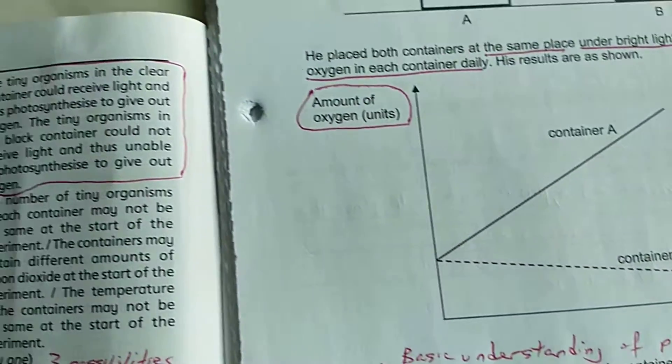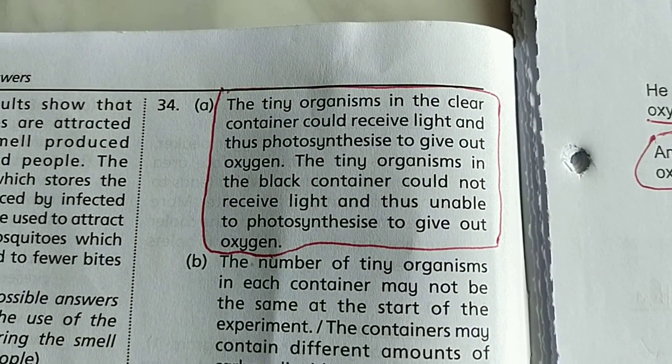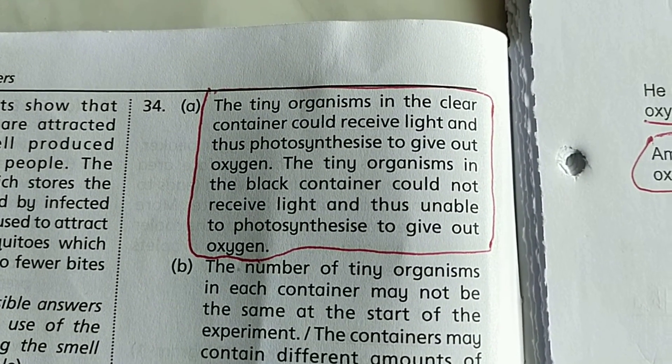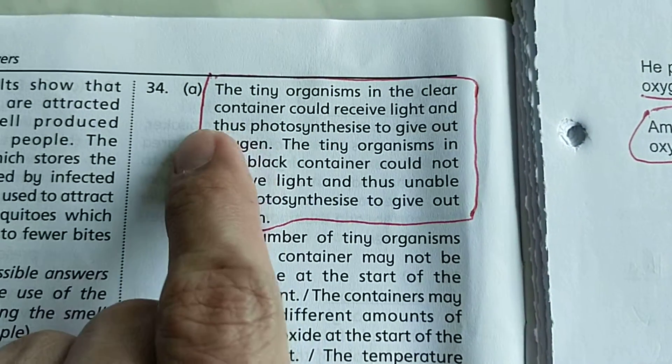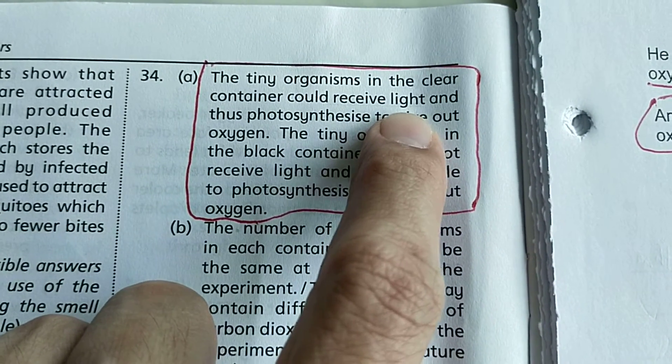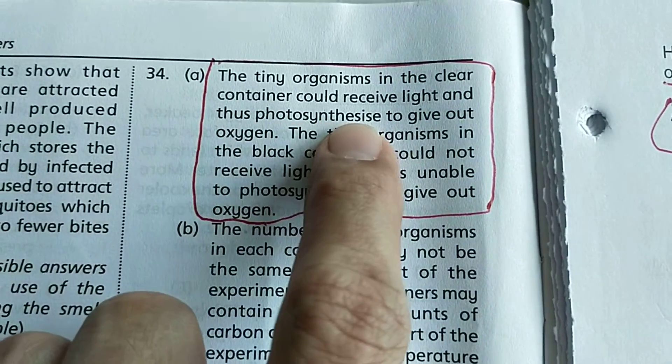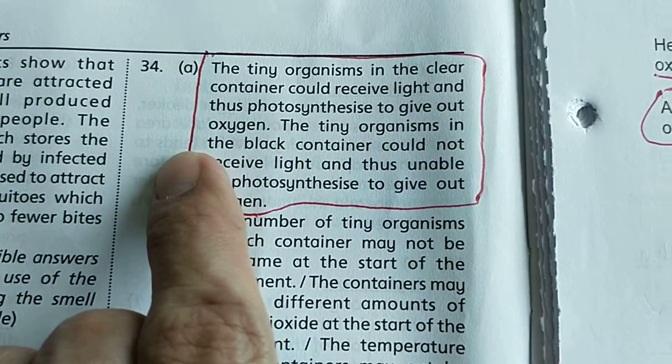So this is the model answer. They should recite or write this out clearly. The tiny organisms in the clear container could receive light and thus photosynthesize to give out oxygen.